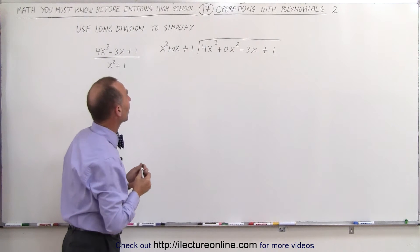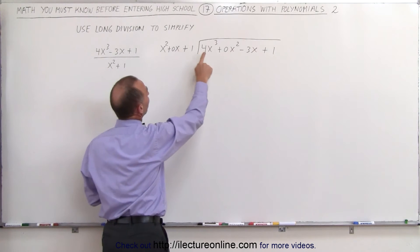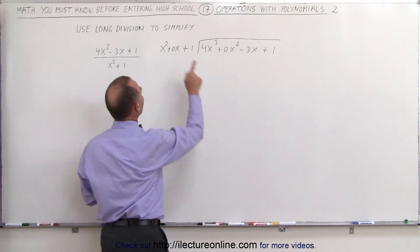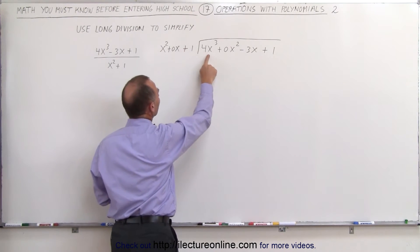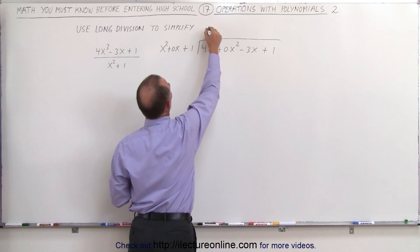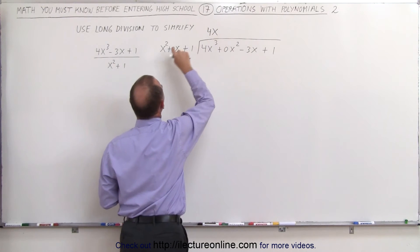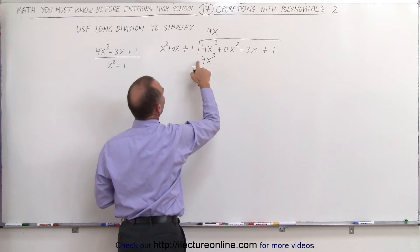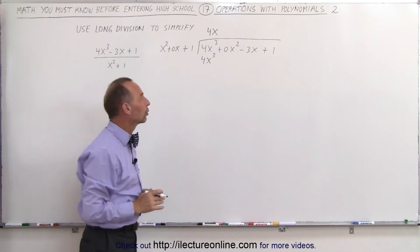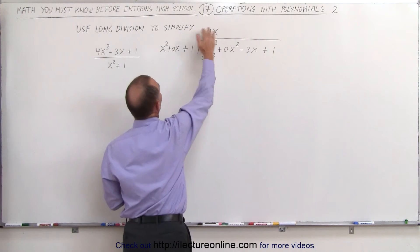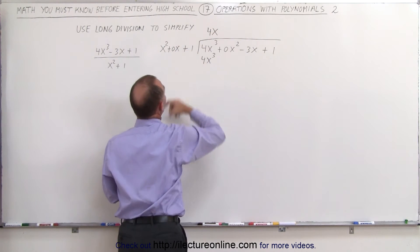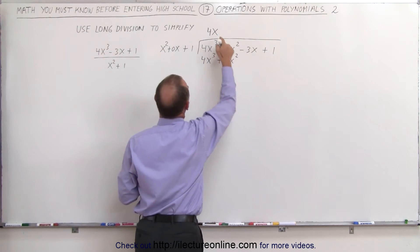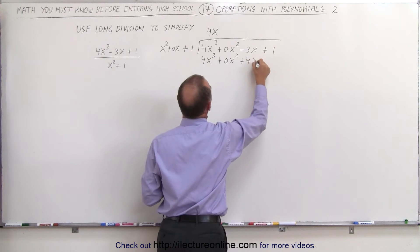Now we ask: x-squared goes into 4x-cubed how many times? The best way to think about it is, what should I multiply this term by to get this? The answer is 4x, because 4x times x-squared gives us 4x-cubed, so that when we subtract this from that, we get 0. But then we also have to multiply 4x by all the other terms: 4x times 0x gives us plus 0x-squared, and 4x times 1 gives us plus 4x.